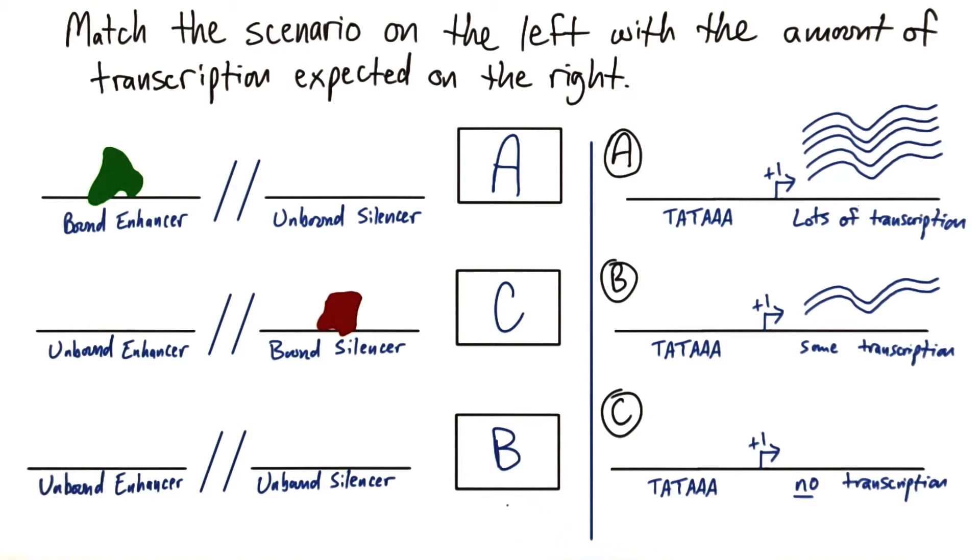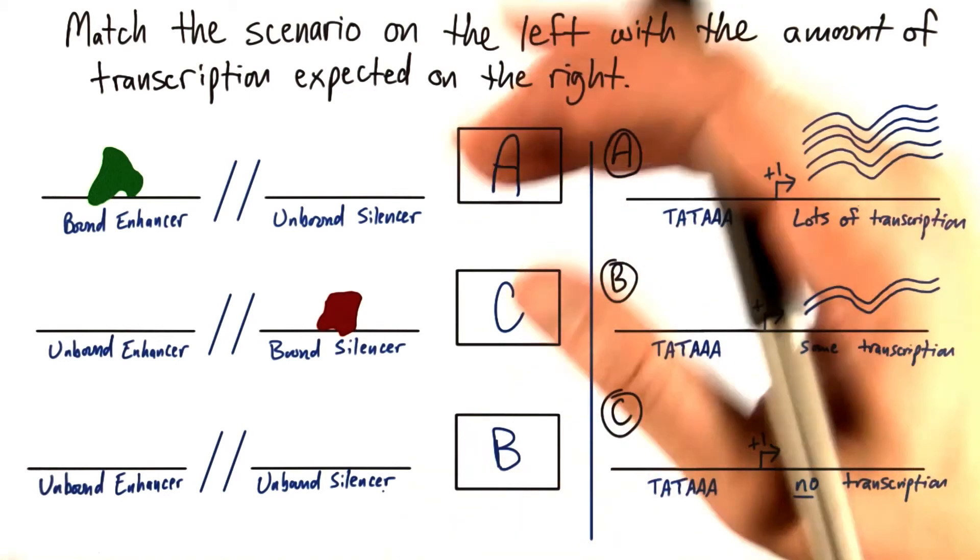But in general, there's going to be some transcription that happens at the site. But because there's no enhancer or silencer bound, we're not going to have these extremes show up where we have a lot of transcription happening or no transcription happening.